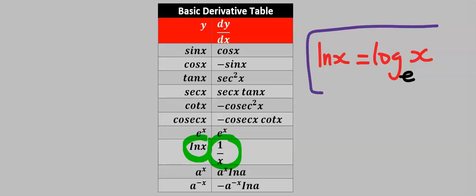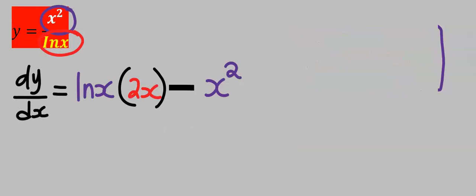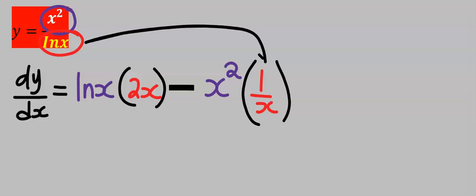Remember that the natural log of x is the same thing as log x to the base of exponential. Hence, I'm going to have 1 over x, which is the derivative of the natural log.